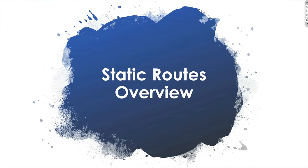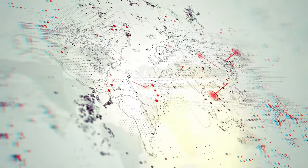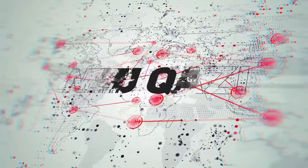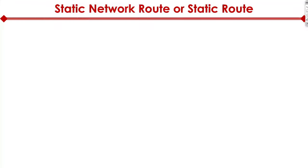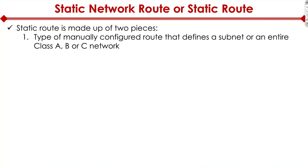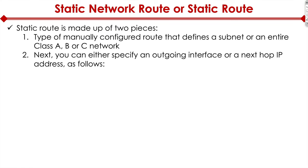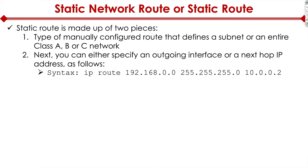A static network route, or static route, is composed of two different pieces. First, it's a manually configured route that defines a subnet or an entire Class A, B, or C network. Second, you can either specify an outgoing interface or a next hop IP. Here's how the syntax looks.